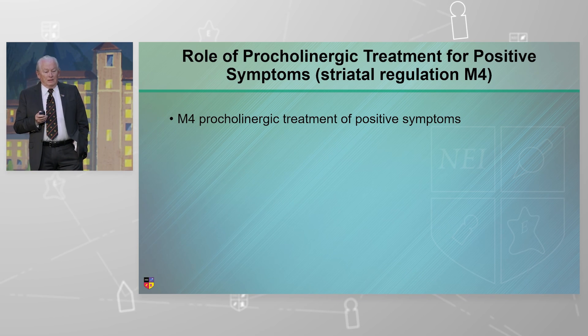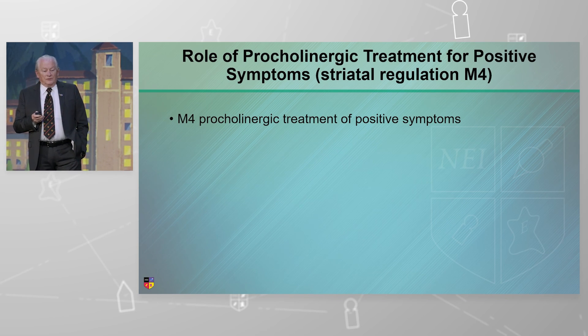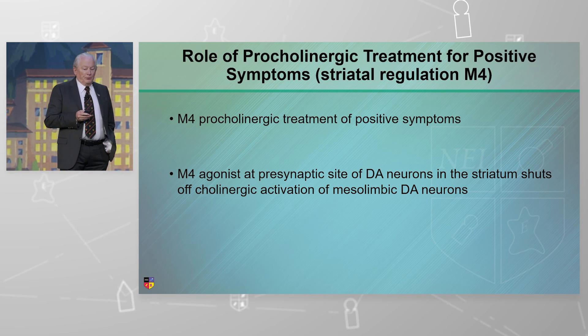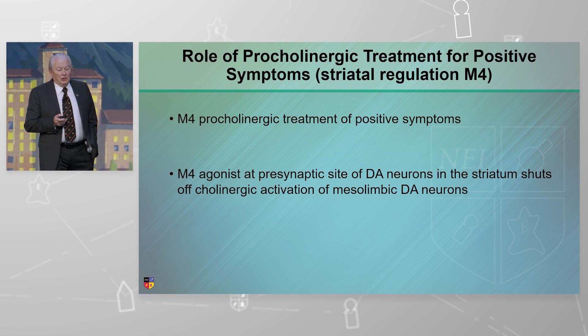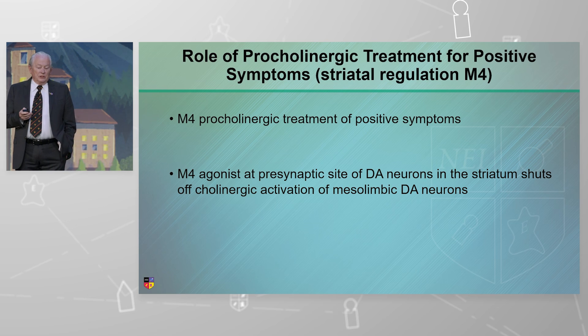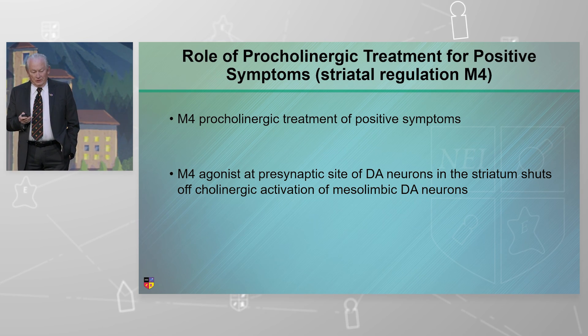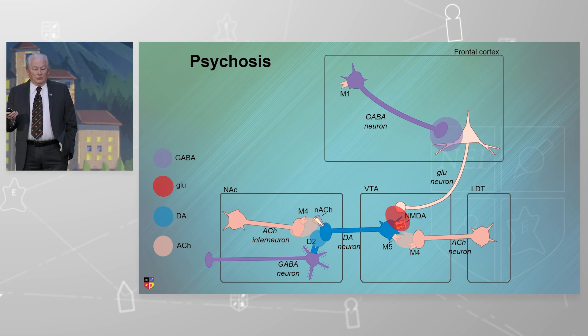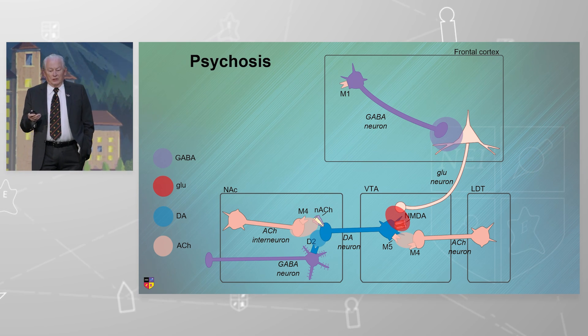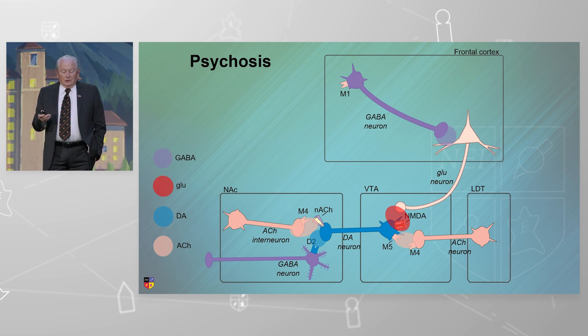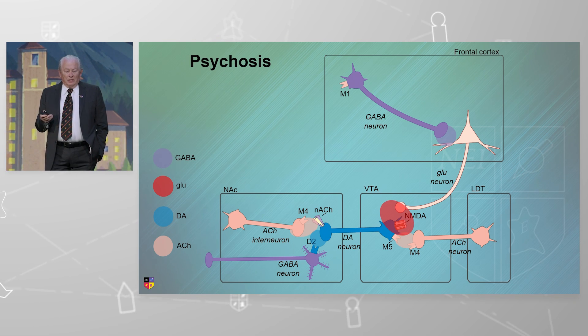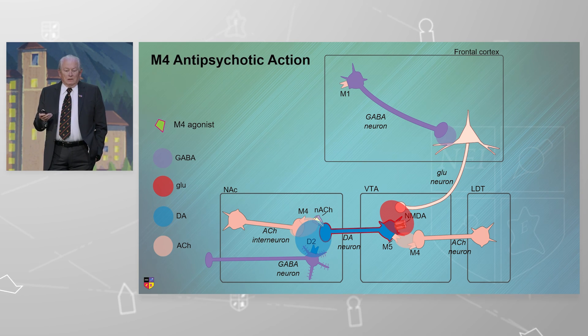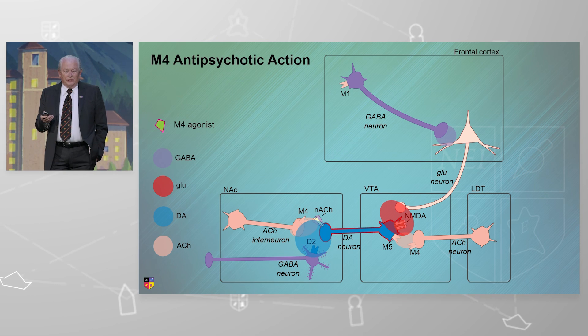Ready? It treats positive symptoms because that agonist at that presynaptic site shuts off cholinergic stimulation of dopamine release. Ready? Here's my psychotic circuit. Way too much dopamine because this goes down, this excitatory thing kicks sucker, out comes dopamine.